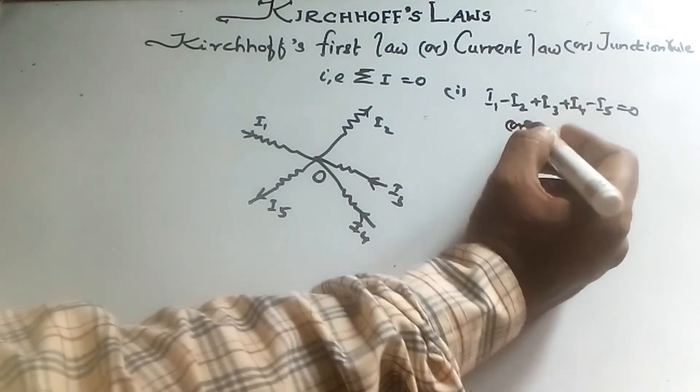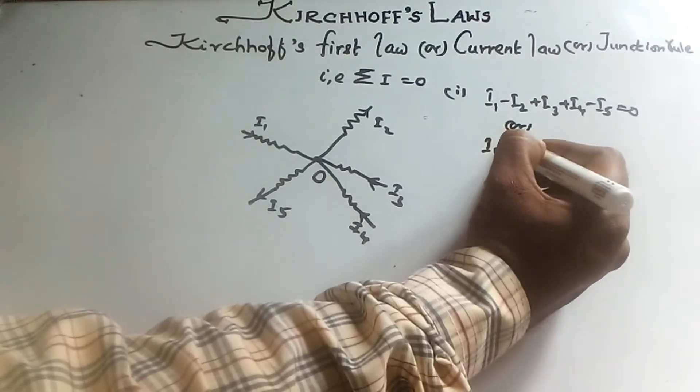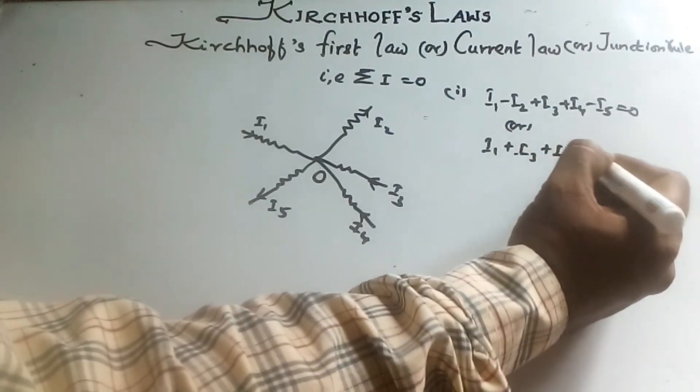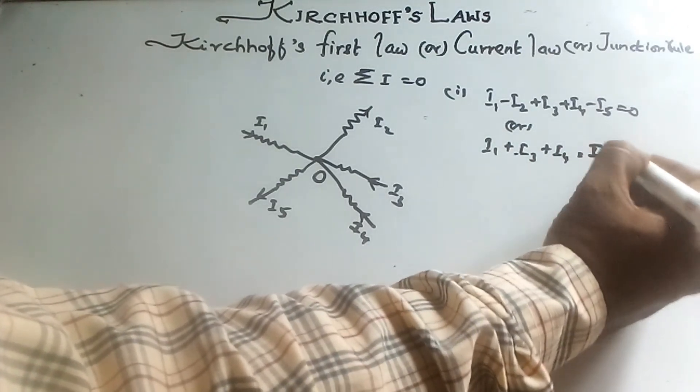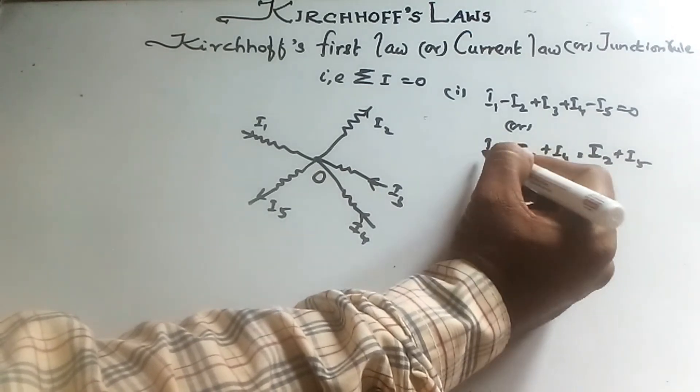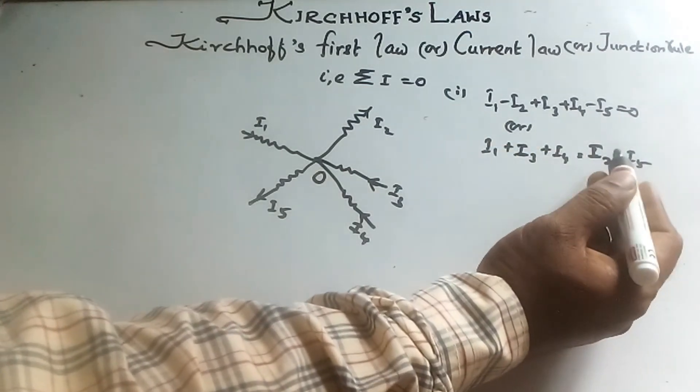So this may be written as I1 plus I3 plus I4 equal to I2 plus I5. That is, sum of incoming currents equal to sum of outgoing currents.